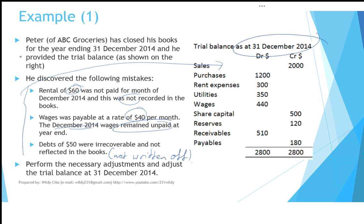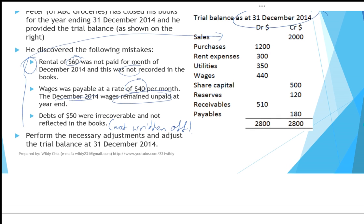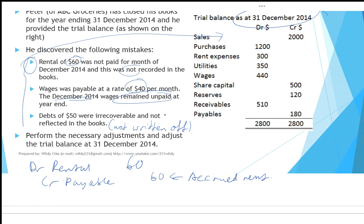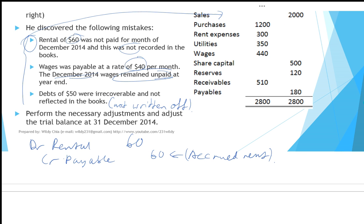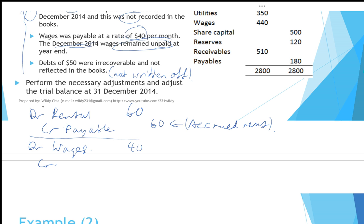Let's go through the correcting entries. Rentals of 60 were not recorded, so debit rental 60. These rentals were not paid so they are payable — credit payable 60. You can also record this as accrued rent. Next, wages of 40 remain unpaid at end of year and have not been recorded. The adjusting entry is debit wages 40, credit payable — or you could use accrued wages if you like.